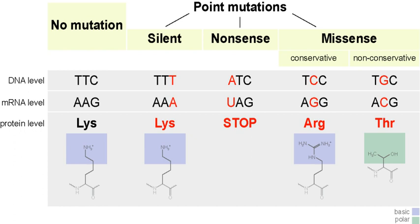These sickle-shaped cells cannot carry nearly as much oxygen as normal red blood cells and they get caught more easily in the capillaries, cutting off blood supply to vital organs. The single nucleotide change in the beta-globin means that even the smallest exertions on the part of the carrier can result in severe pain and even heart attack.